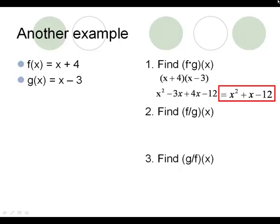Number 2, we are taking Frank and we are dividing him by George. Frank on top, George on bottom. x plus 4 on top over x minus 3 on bottom. You cannot cancel the x's — the x on top is married to the 4, and the x on bottom is married to that minus 3. So you cannot cancel those x's. This is your final answer.